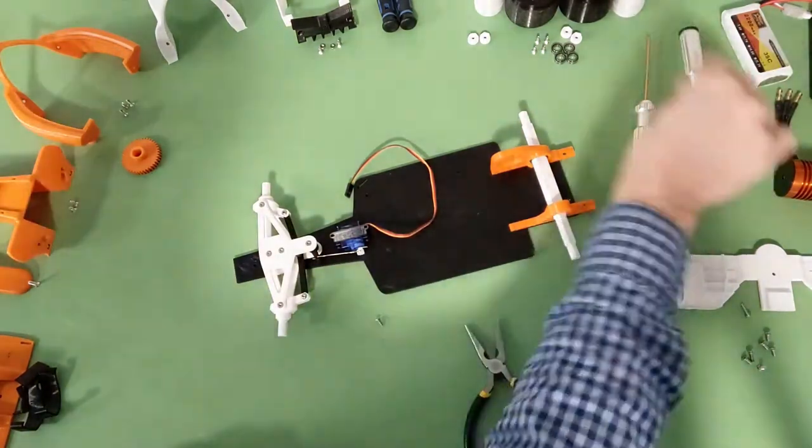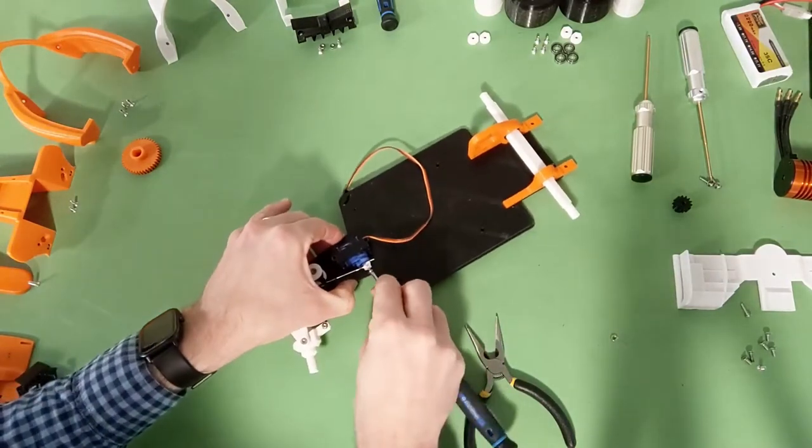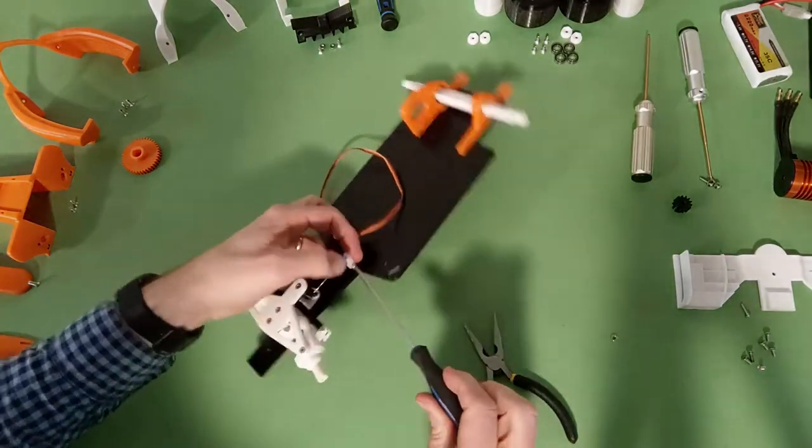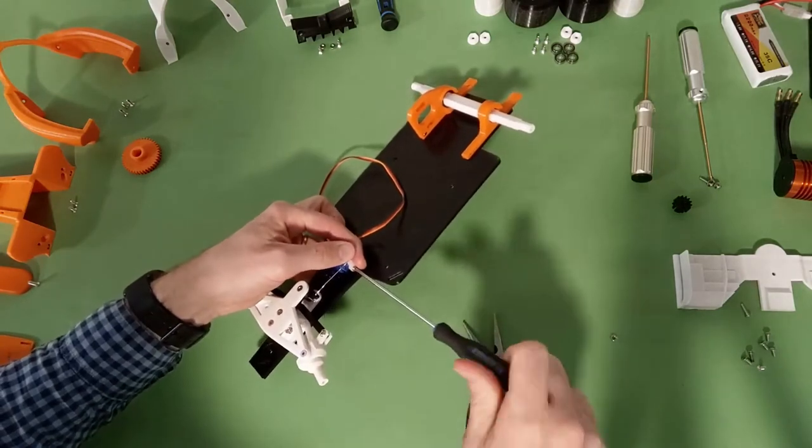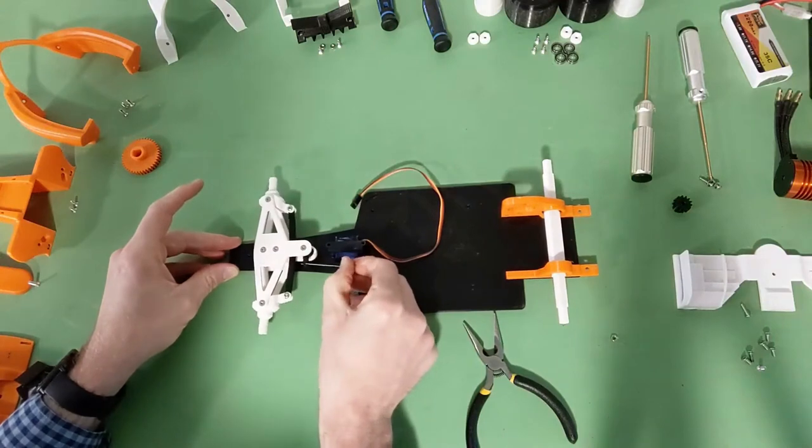Next screw down your servo horn with the appropriate screwdriver, likely a Phillips. It's important to note that when you do this, you want your steering to be straight. You can see here that I didn't do that and now my steering is going to be a bit crooked later, and I'm going to have to go back and fix it.